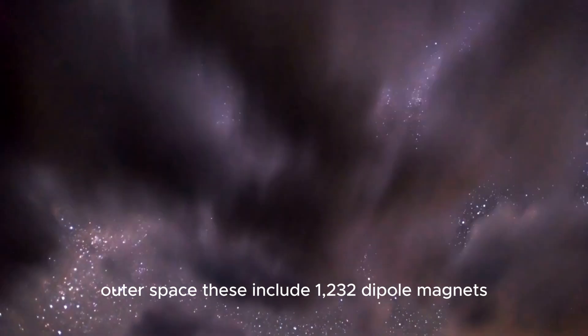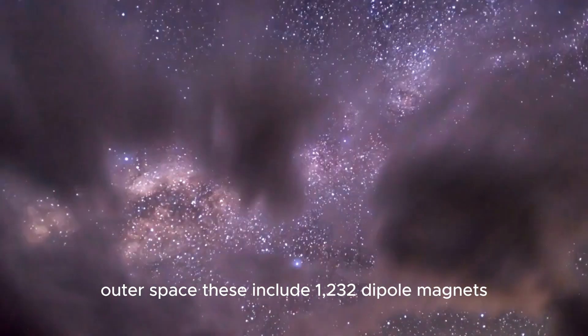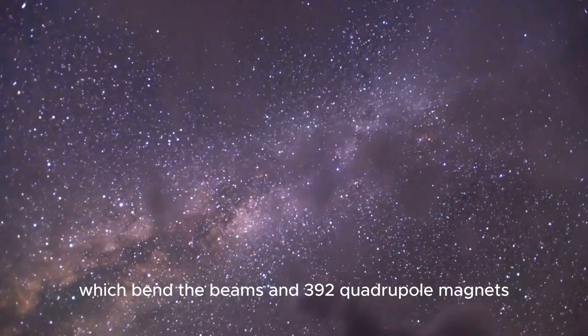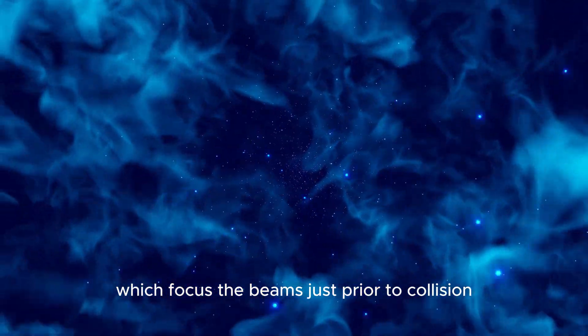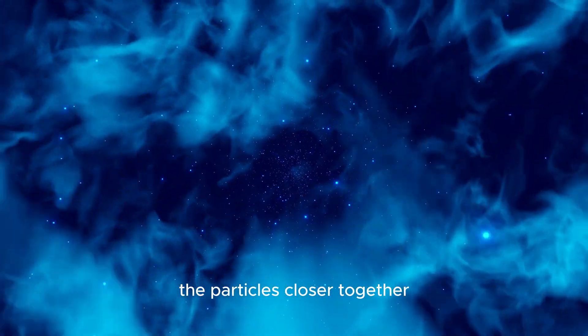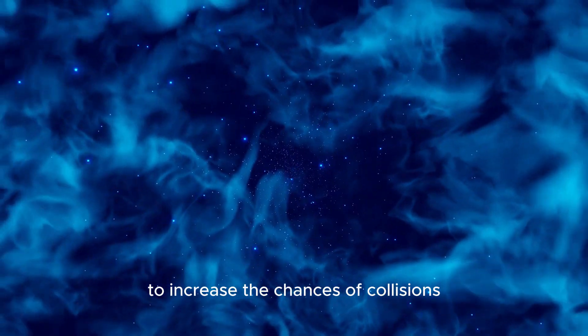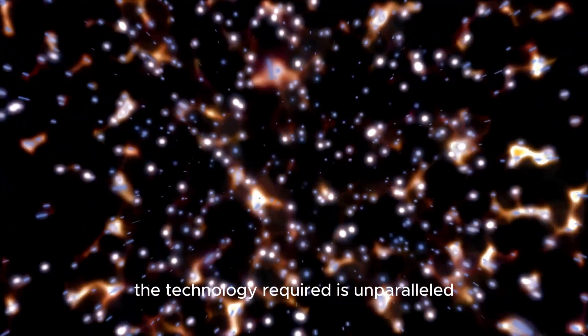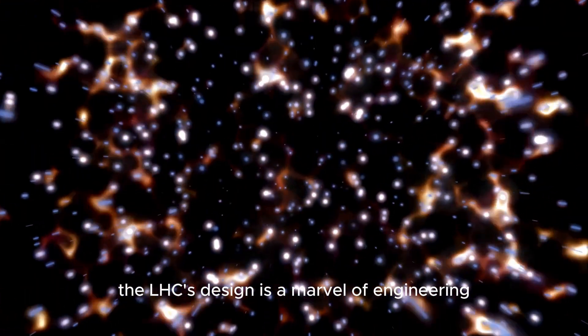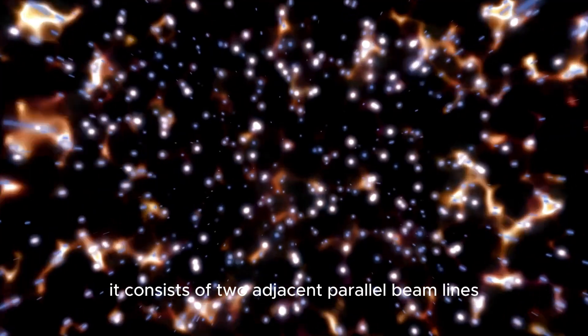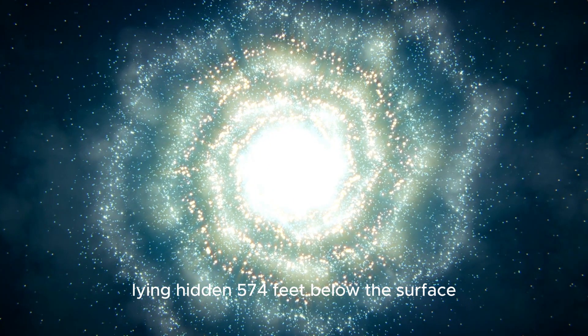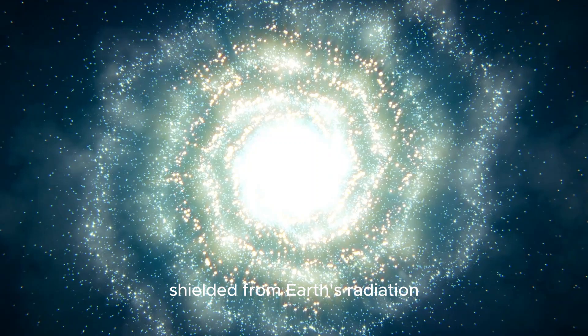These include 1,232 dipole magnets, which bend the beams, and 392 quadrupole magnets, which focus the beams just prior to collision. Another type of magnet is used to squeeze the particles closer together to increase the chances of collisions. The technology required is unparalleled. The LHC's design is a marvel of engineering. It consists of two adjacent parallel beam lines lying hidden 574 feet below the surface, shielded from Earth's radiation.